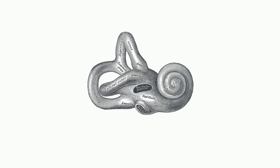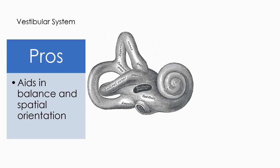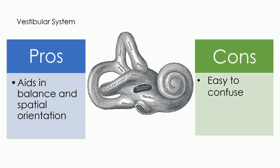Dizziness is the cause of one system, and that is the vestibular system. It aids in balance and spatial orientation, but it can easily be confused as we're about to see.